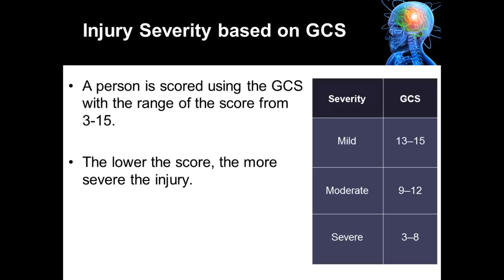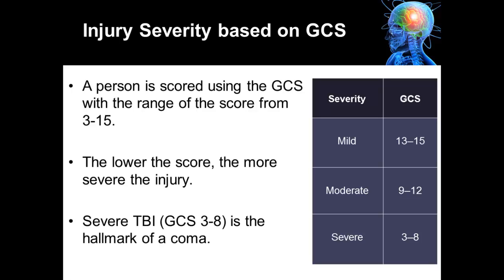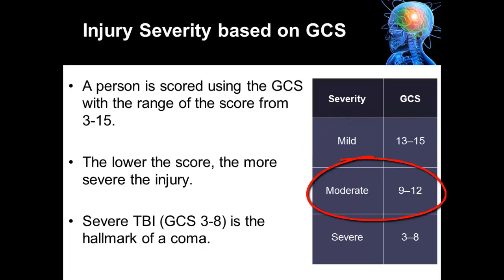A severe traumatic brain injury is a Glasgow Coma Scale of three to eight, and is the hallmark of a coma, where individuals do not respond to stimuli. A mild traumatic brain injury or concussion is defined as a Glasgow Coma Scale of 13 to 15. A moderate traumatic brain injury is a Glasgow Coma Scale of nine to 12. A severe traumatic brain injury is a Glasgow Coma Scale of three to eight.